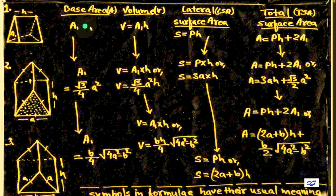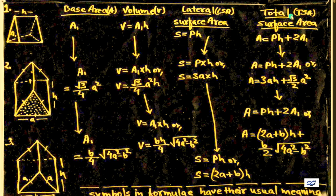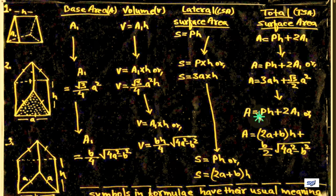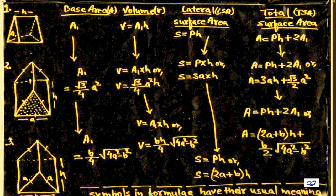All the symbols and letters used in the formulas have their usual meaning. Base area is denoted by A, volume by V, lateral surface area by LSA or S, total surface area by TSA. P is perimeter, S is height, root 3 upon 4 — a is side, a squared, A is area, S is height. All these things like A, A squared, P into H, A1 have their usual meaning as discussed earlier.